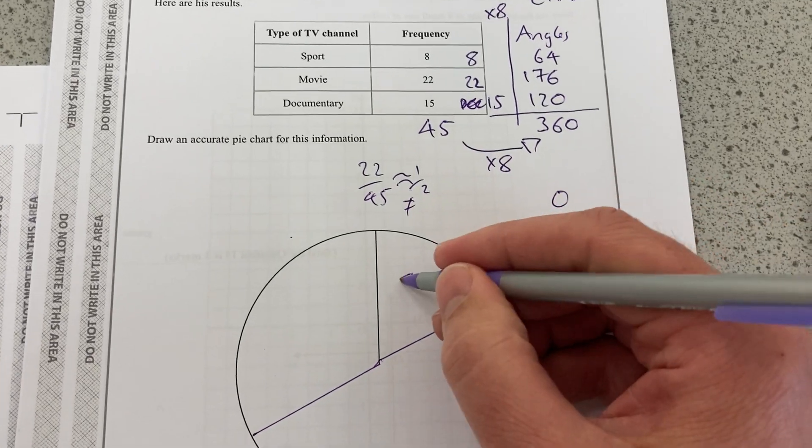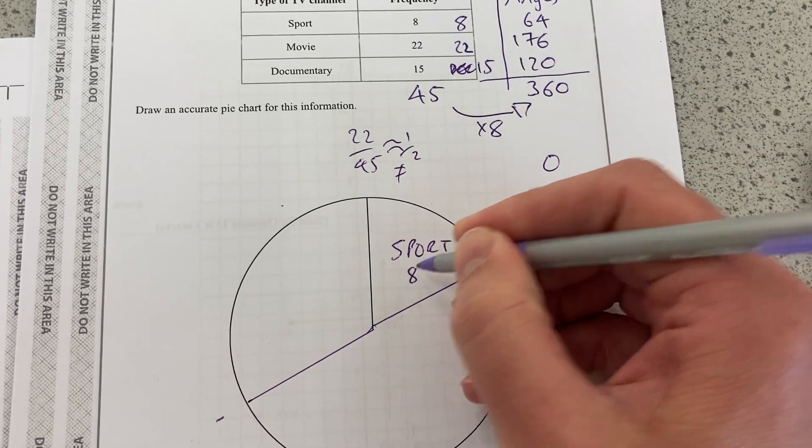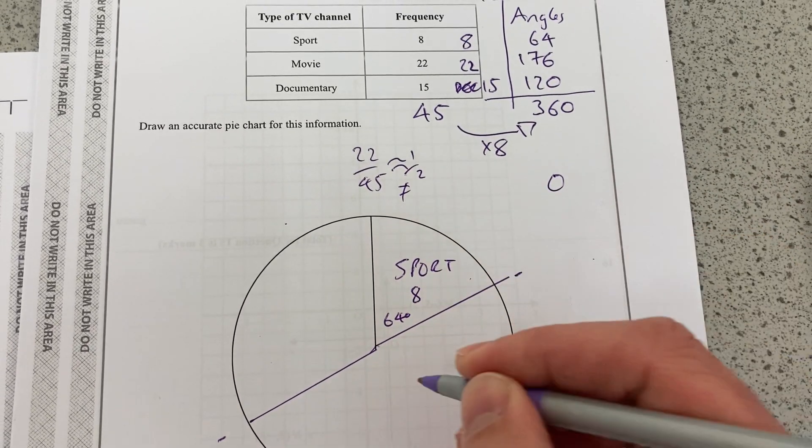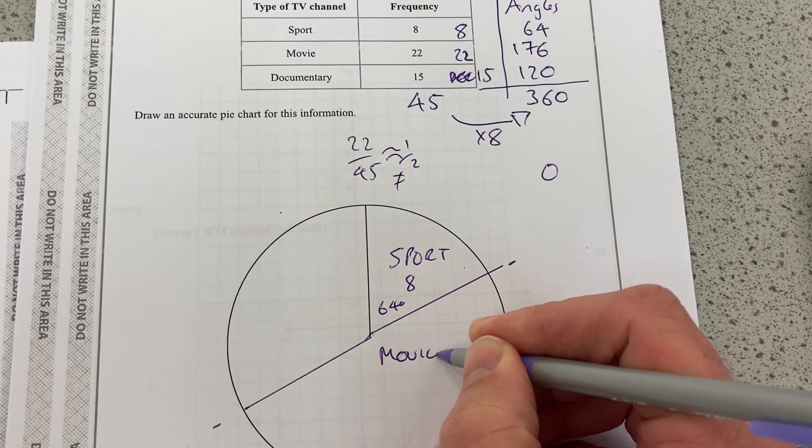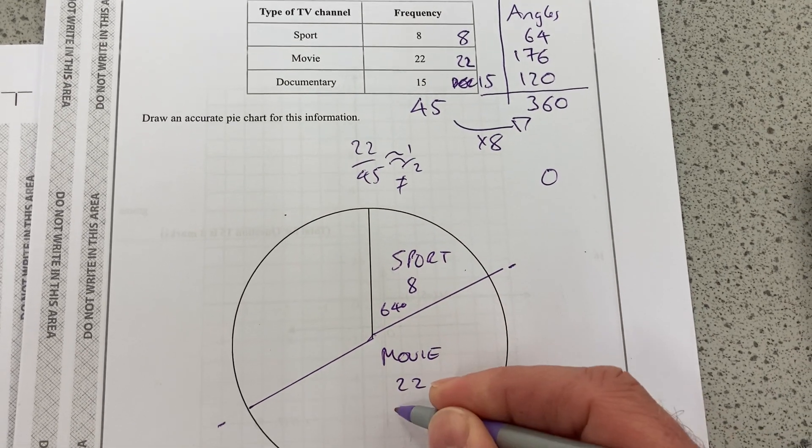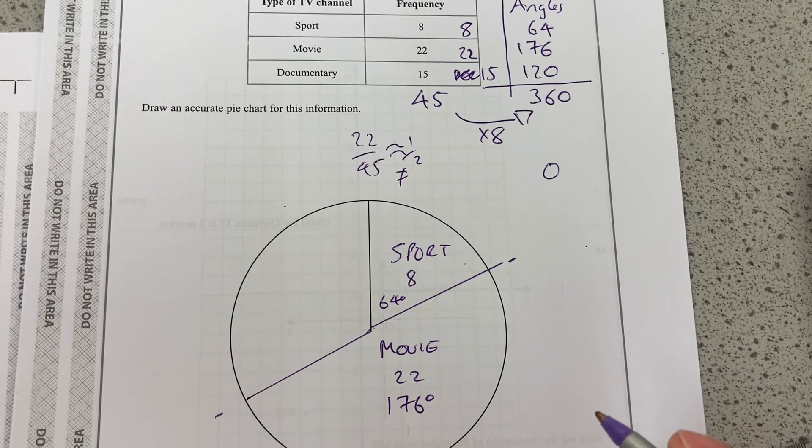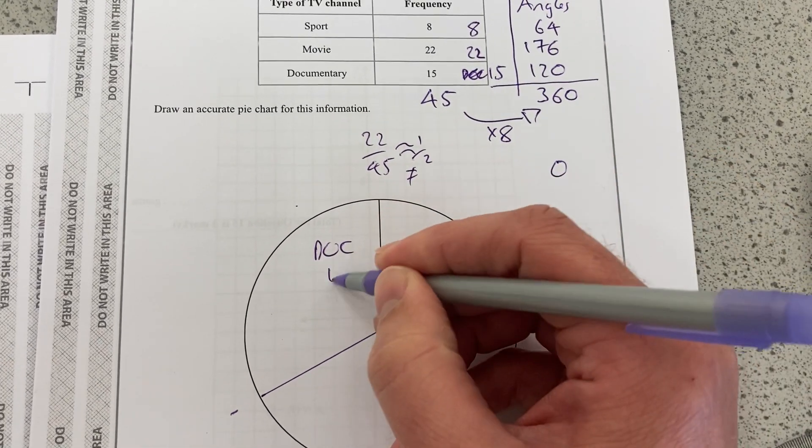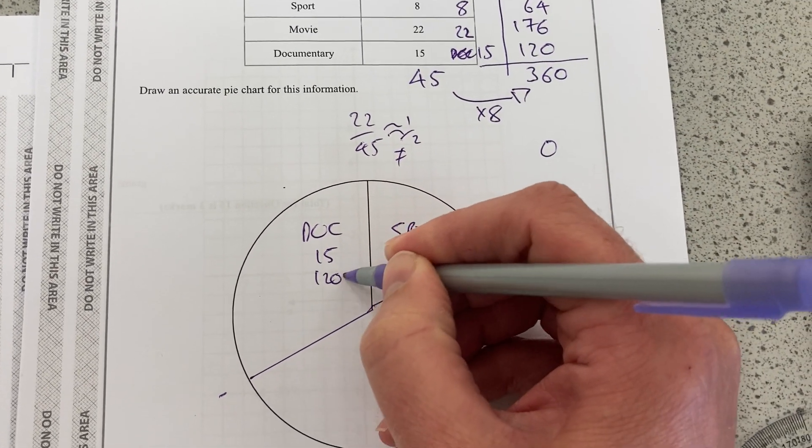And so that would be sport, which was 8 or 64 degrees. And this was movies, which is 22 or 176 degrees. And then this should be documentaries, which is 120 degrees.